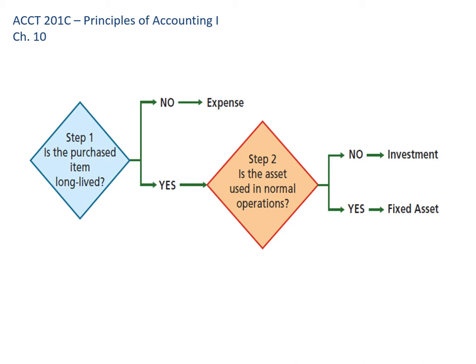If it is long-lived, we ask: is it used in operations? If it isn't — like that backup machine — it would be an investment. If it is used in normal operations, we'd call it a fixed asset. Also, if it's a very small value, we'd expense it too. For example, a hammer is going to last a long time, but it's a fairly low cost, so it's not worth tracking as equipment and depreciating it. Companies typically set a dollar amount below which they just expense it.